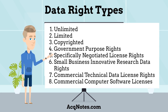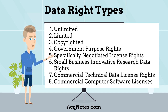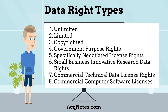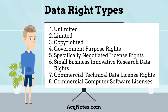What are the types of data rights? There are eight major data right types: 1. Unlimited, 2. Limited, 3. Copyrighted, 4. Government Purpose Rights, 5. Specifically Negotiated License Rights, 6. Small Business Innovative Research Data Rights, 7. Commercial Technical Data License Rights, and 8. Commercial Computer Software Licenses. I will go over each of these types next.